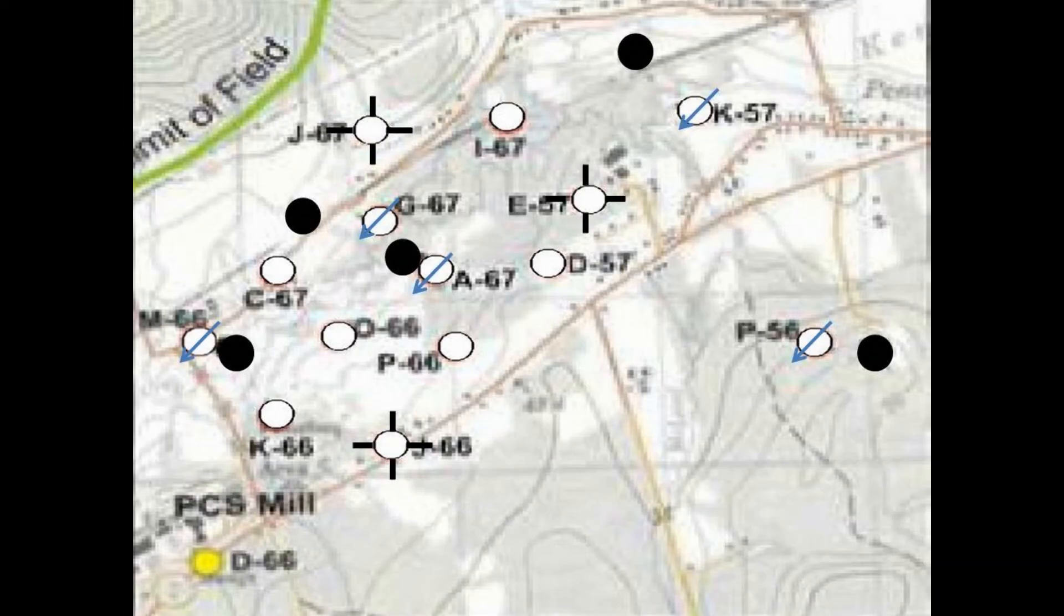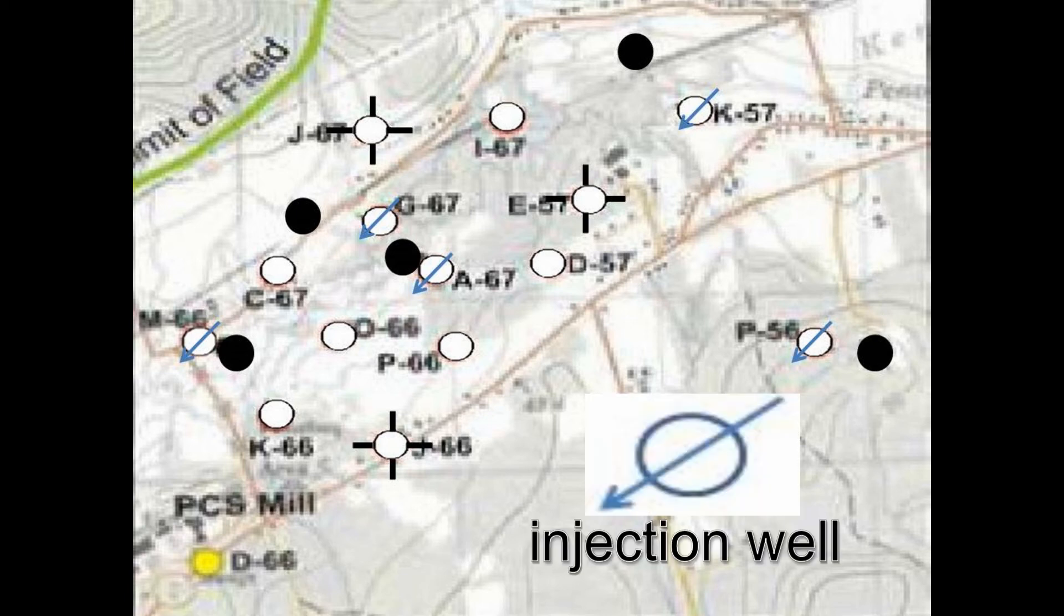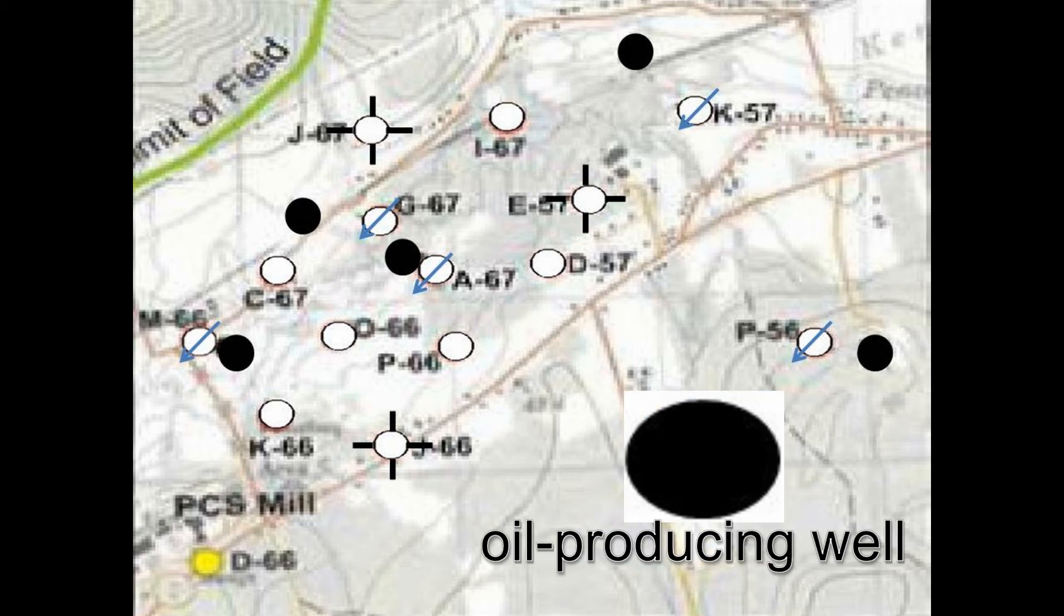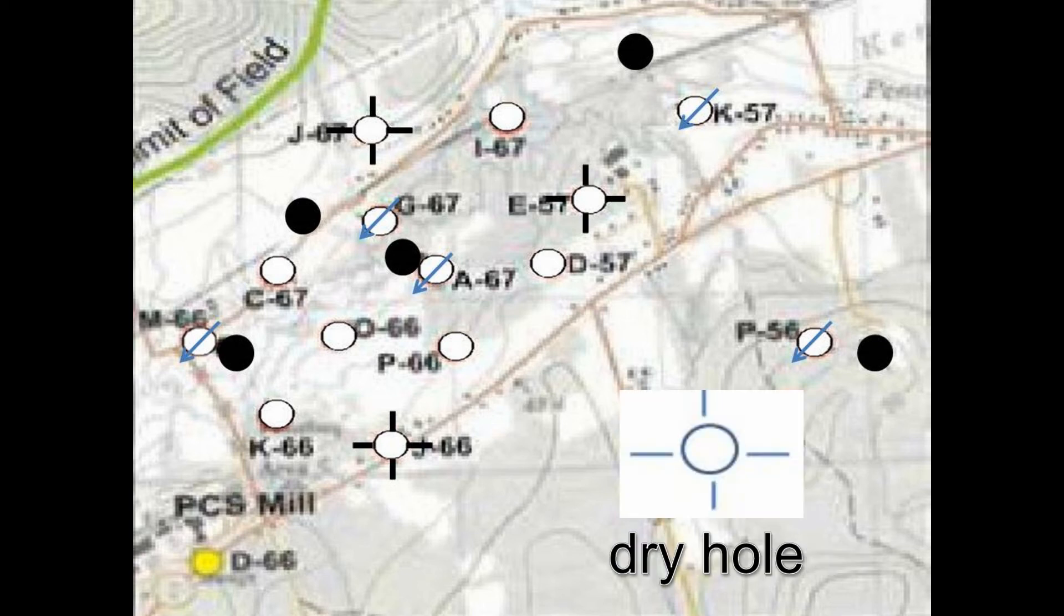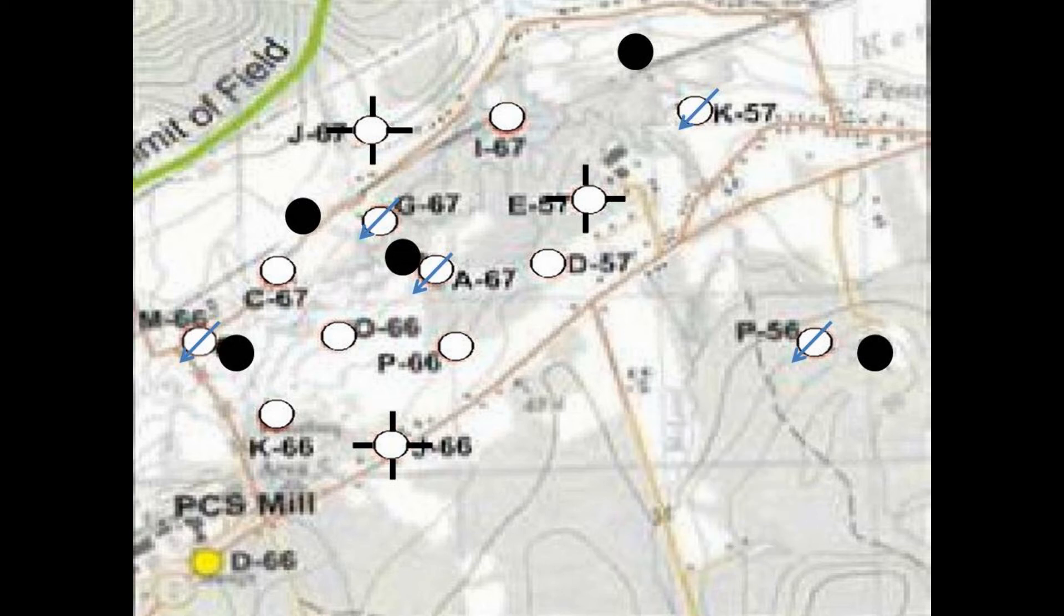Now please look at this illustration. To help you better understand, let me first explain some of the symbols that are used on these field maps. An empty circle with an arrow through it is the symbol for an injection well. A black circle symbolizes an oil producing well. An empty circle represents a future well that will be drilled. An empty circle with four lines surrounding it shows a dry hole. Please learn the meaning of these symbols.